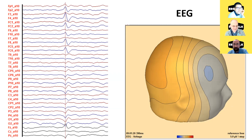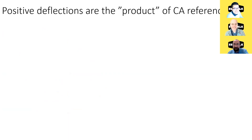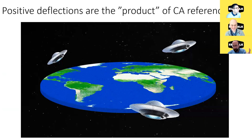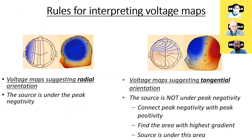Almost convincing? I don't want to be rude, but when I hear the statement that positive deflections are just a product of the common average reference, I always think this is like claiming the earth is flat — this is physically impossible. Let's sum up how you can use voltage distributions of negativities and positivities on the head to localize and estimate the source.